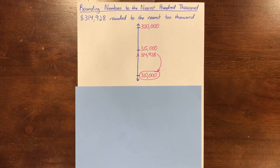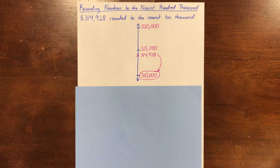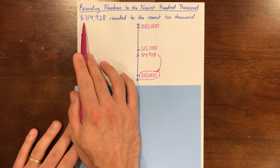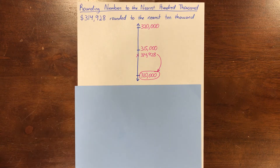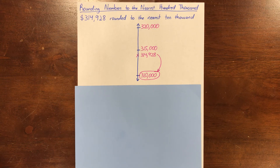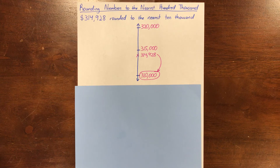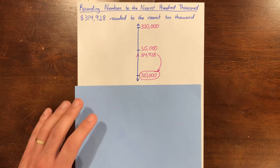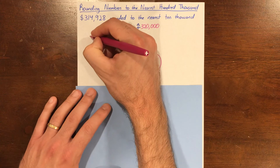What do you notice happens to the digits that are to the left of the rounded place after we've rounded the number? And why do you think that happens? Go ahead and say it out loud. The digits to the left stay the same because we're not rounding those place values. I'll make a note here so we remember that: digits to the left stay the same.